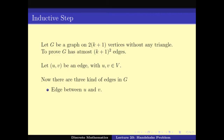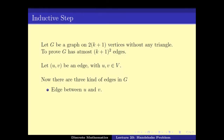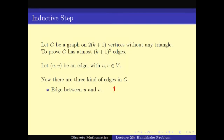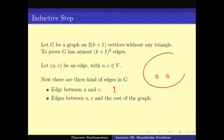First of all, if the graph has no edges, then the number of edges is 0, which is clearly less than (k+1)². So we can assume G has at least one edge. Let u, v be an edge in the graph. There can be three kinds of edges: number one is the edge between u and v — there is only one such edge since we have assumed it exists.